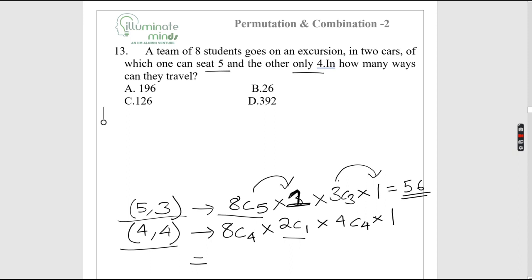For the 4-4 grouping: choose 4 people for the first group in 8C4 ways, and they can choose which car (5-seater or 4-seater) in 2C1 = 2 ways, but the remaining 4 take the leftover car. However this double-counts, so the total for this case gives 120. The overall answer is 56 + 120.